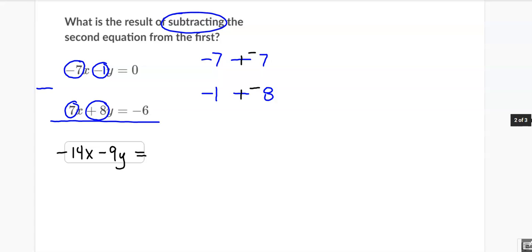And then here on my last set of numbers, I have 0, take away a negative 6. So I have 0, subtract negative 6. And don't subtract. Add the opposite. And here I'm just adding. So that's going to come out to be 6.